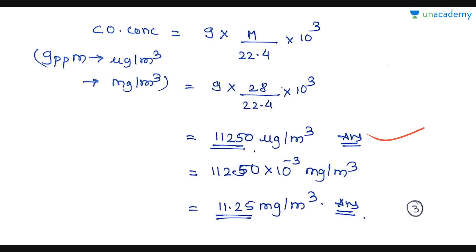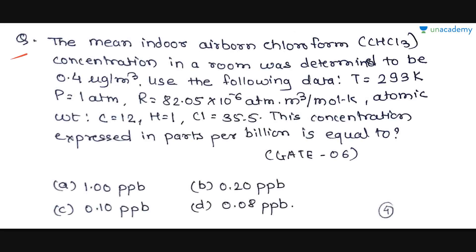So these are our respective answers. The next question: the mean indoor airborne chloroform (CHCl₃) concentration in a room was determined to be 0.4 micrograms per meter cube. Use the following data — T = 293 K, P = 1 atmosphere, R = 82.05 × 10⁻⁶ atmosphere·m³ per mole·K. Atomic weights: C = 12, H = 1, Cl = 35.5. Express this concentration in parts per billion (ppb).